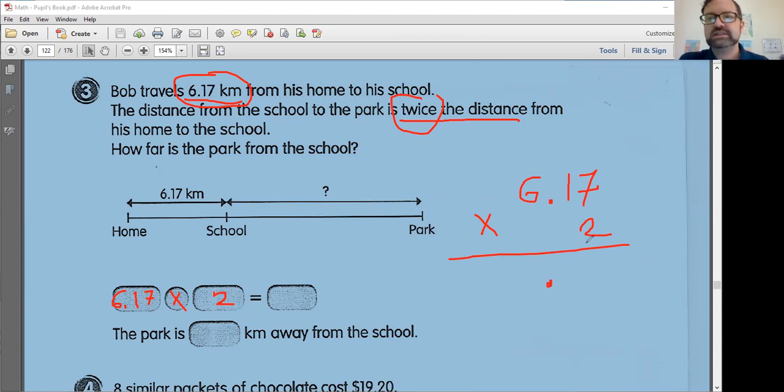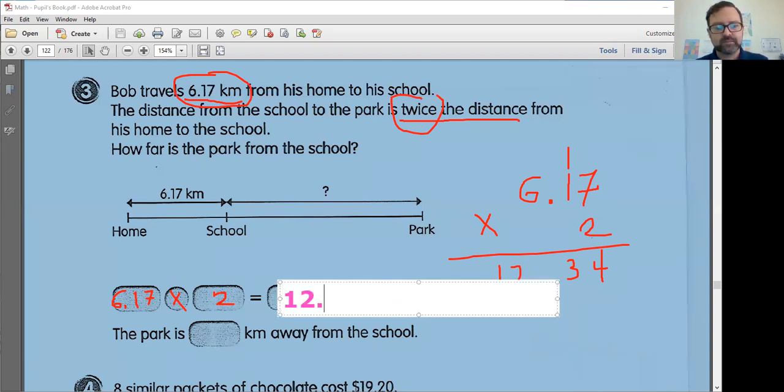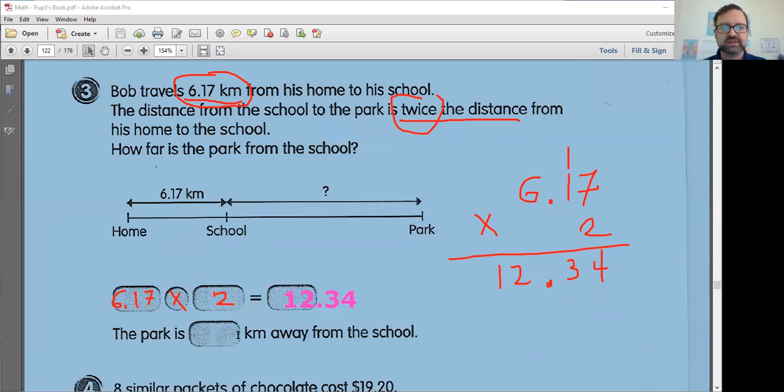Seven times two is 14. Carry the one. One times two is two plus one is three. And six times two is 12. And make sure you check your work. Sorry, I'm going through this very fast, but here's a good example of maybe you're not sure about your math. Just pretend if you estimate this, I don't know how much 6.17 times two is, but I know that six times two is 12. And our answer is 12.34. So this seems reasonable to me. It seems logical. It makes sense. So the park is 12.34 kilometers away from the school.